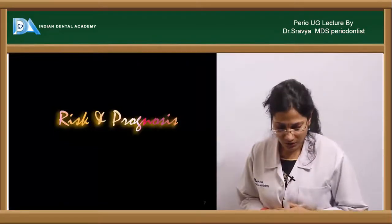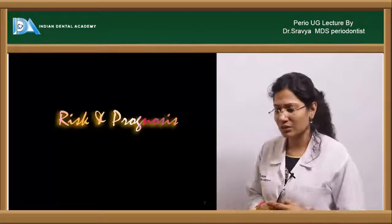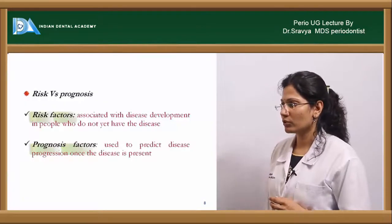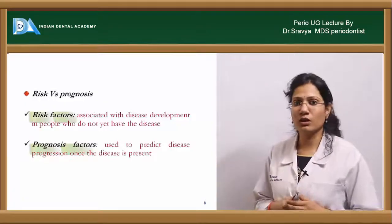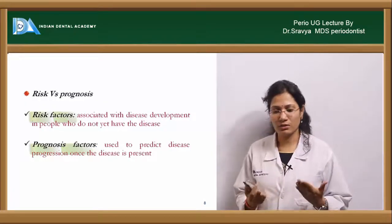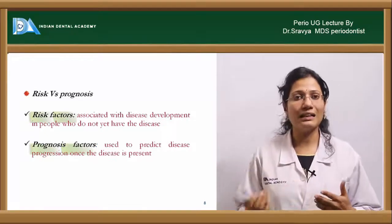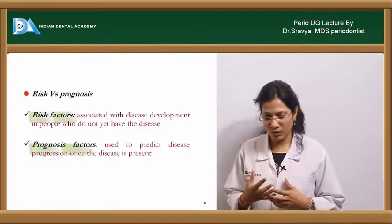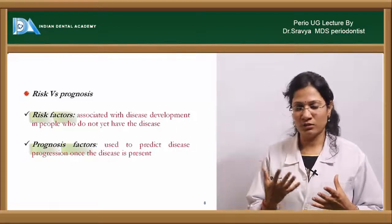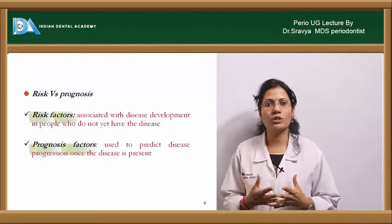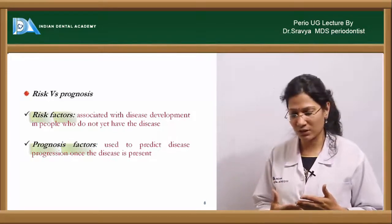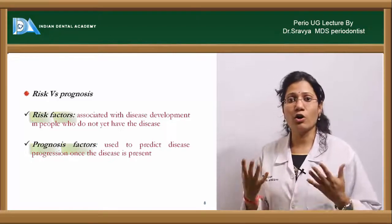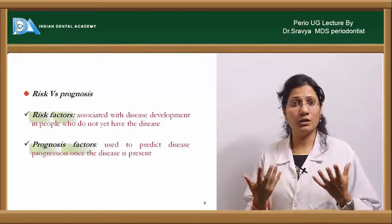What is risk? You need to differentiate between risk and prognosis — there is a big difference between the two. Risk factors are already present within the individual and the individual is getting prone to the disease. For example, smoking is one of the risk factors for lung cancer, for prenatal diseases, and for causing any form of lung diseases.